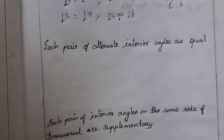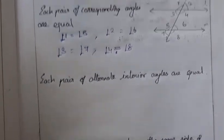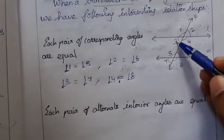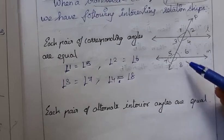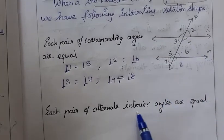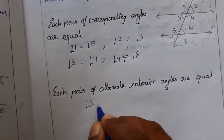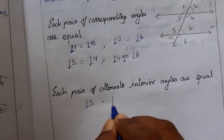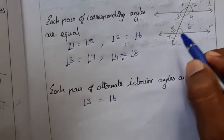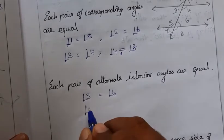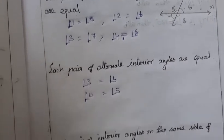Next: each pair of alternate interior angles are equal. Alternate interior angles are opposite to the transversal and in the interior. So angle 3 equals angle 6, and angle 4 equals angle 5.